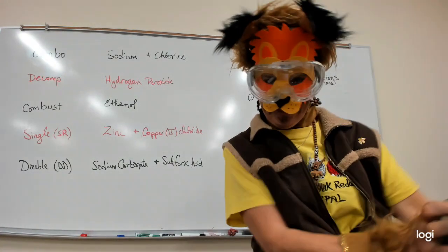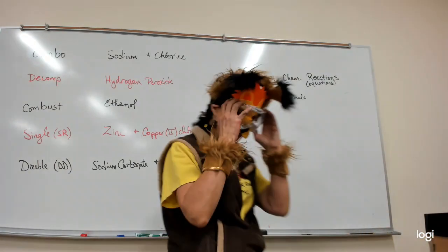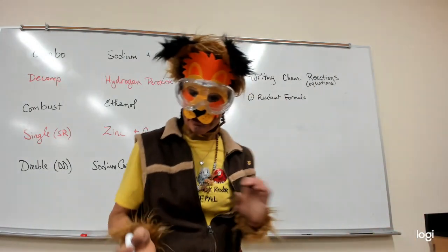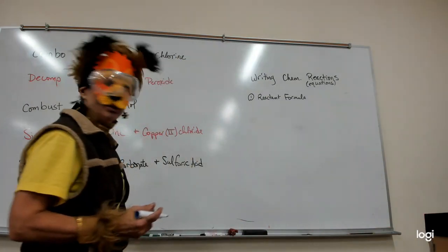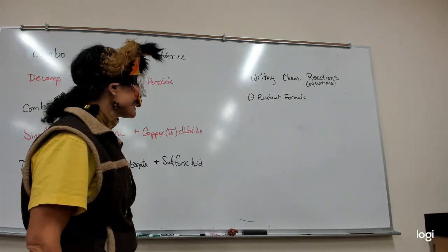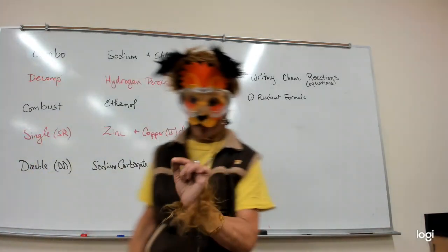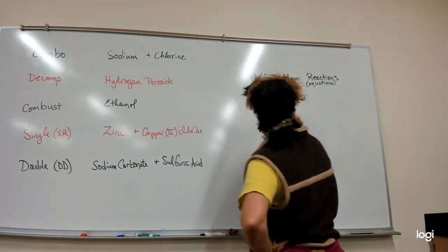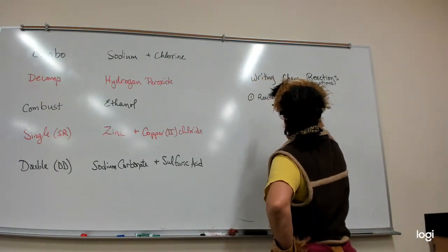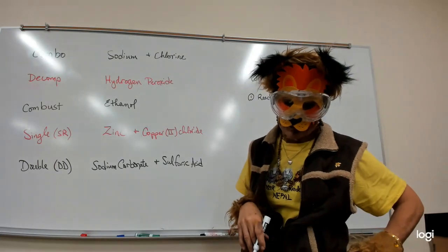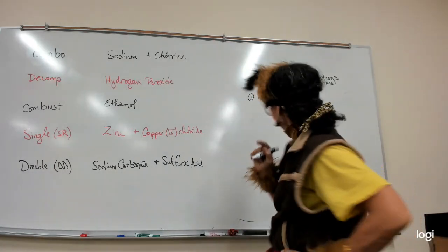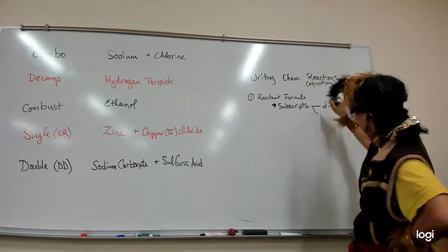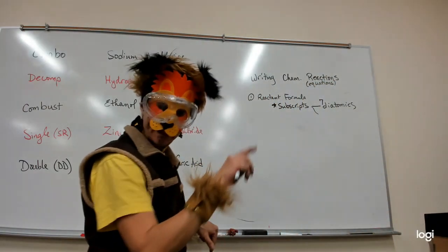So there are steps. If we walk through these steps, we'll make it much easier. Our first step in writing these chemical reactions, which are transformations, is reactant formulas. The reactants will be given to you as words and you need to write the formula. This means the key here is the subscripts. Sometimes there's no subscript, but when do we have subscripts? There's two times. One is the diatomics. Let's walk through them. There are seven diatomics. They make seven on the periodic table.